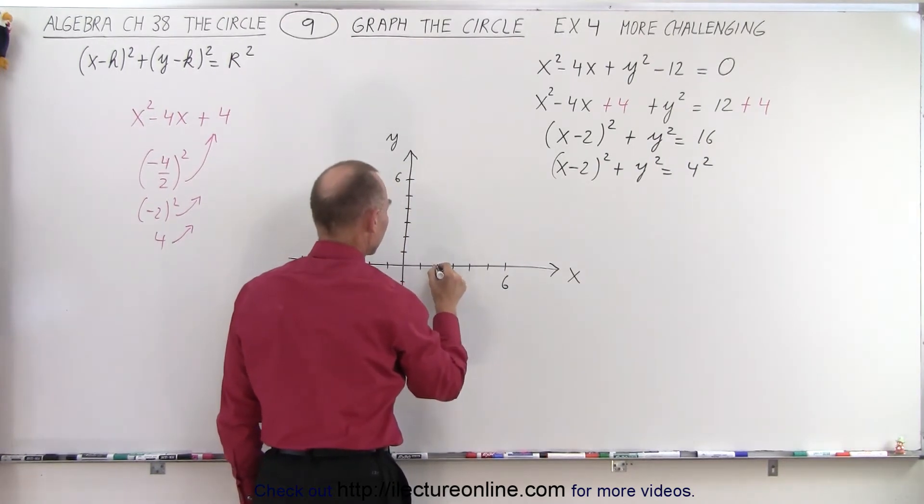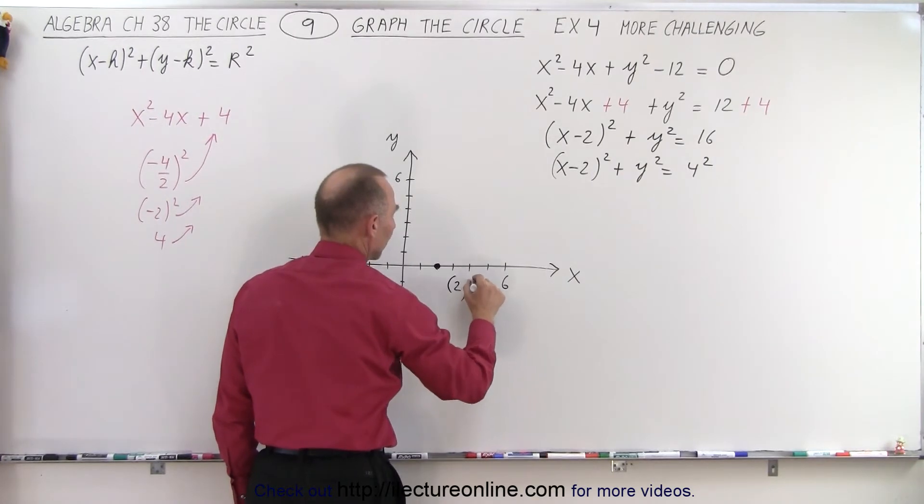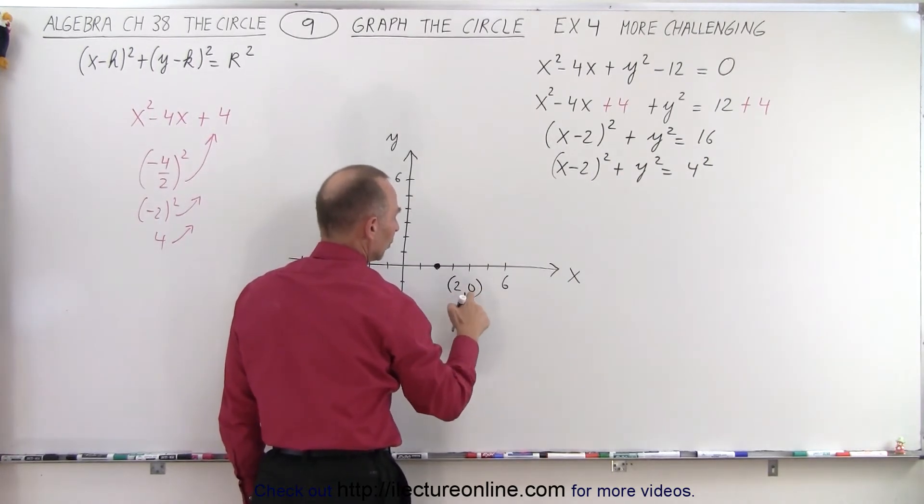h equals 2 and k equals 0. h equals 2 is right here, k is 0. So this is the center, and the center is located at 2, 0.